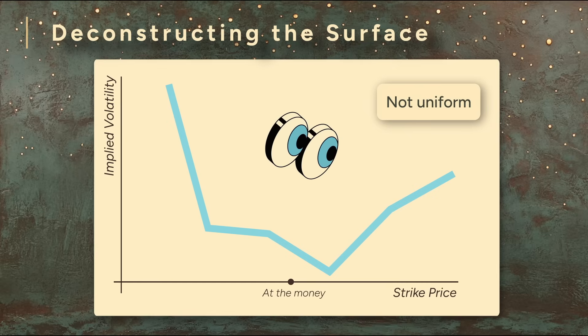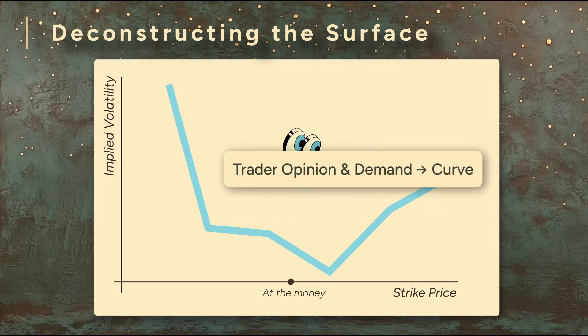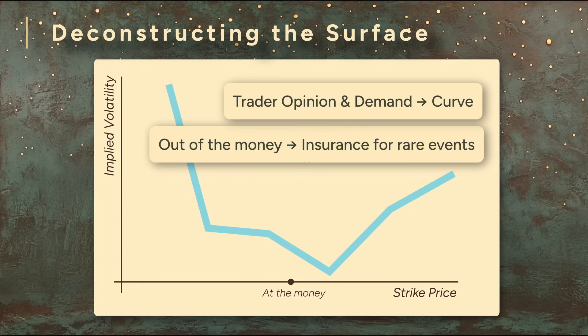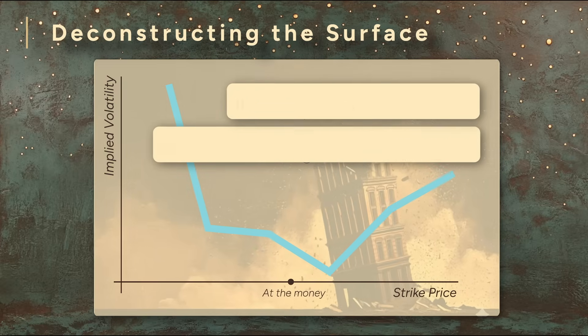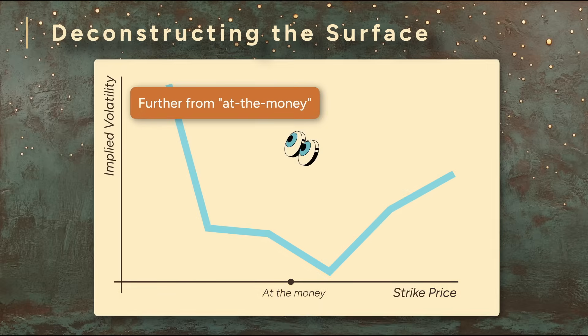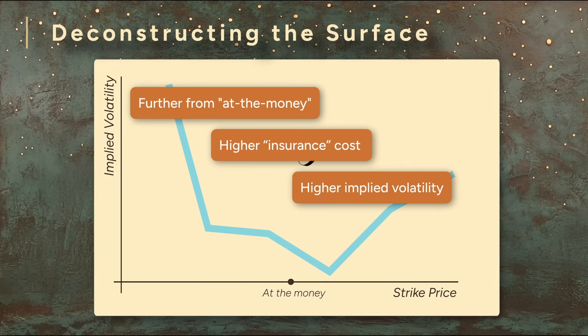or a smirk, because the market's perception of risk changes depending on the strike. Why does it curve? Trader opinion and demand. Far out of the money options, whether calls or puts, serve almost like insurance policies for unlikely but extreme events. The general principle is the further you move from the at-the-money strike, the more the market charges for that insurance. Hence implied volatility rises.